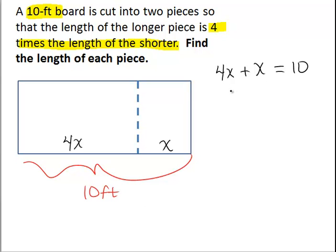When we do so, we combine like terms, and we obtain 5X equals 10. And we then divide both sides by 5 to solve this equation. And we have X equals 2.